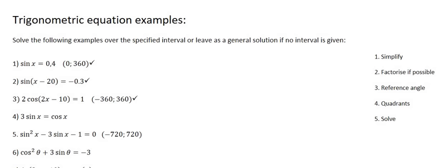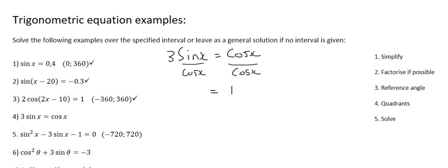Let's start with number four. There's a little trick we're going to do with this one. So what we can do is divide by cos. So the equation at the top here is 3 sin x equals cos x. Remember in maths, what you do to one side you do to the other side, so we divide both sides by cos x. On the right hand side that leaves us with one, but here we've got sin over cos — remember that's tan — so it's 3 tan x equals one.